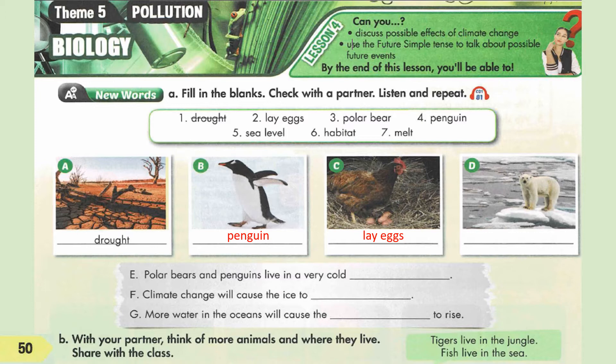Next, letter D: Polar bear. A polar bear is an animal — it is a kind of bear with white fur living near the North Pole. Letter E: Polar bears and penguins live in a very cold habitat. Habitat is a natural environment in which a kind of animal or plant lives.